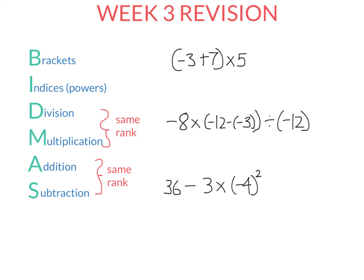The acronym BIDMAS tells us the order in which we apply operations such as subtraction, multiplication, and so on. We perform any operation in the brackets first — that's all brackets do in maths: change the order of operations. Afterwards we do any powers. Division and multiplication are the same rank, so we perform whichever of these occurs first from left to right. Similarly, for addition and subtraction, we do whichever occurs first from left to right.